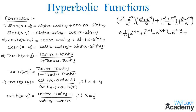Now coming to the next term: by multiplying we get e^(x+y), then minus e^(x-y), plus e^(-x+y), then minus e^(-x-y). Now let us cancel the terms having opposite signs. This term gets cancelled, and then again this term also gets cancelled as they have opposite signs.